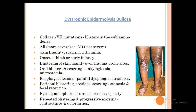Onset is at birth or infancy. Blistering occurs mainly on trauma-prone sites. Oral blisters and scarring can lead to ankyloglossia (tongue) and microstomia — difficulty opening the mouth. There can be esophageal lesions, painful dysphagia, esophageal strictures, perianal blistering, erosions, scarring leading to stenosis and fecal retention, and scarring of the eye. Repeated blistering and progressive scarring leads to contractures and deformities — quite a difficult condition for the child.